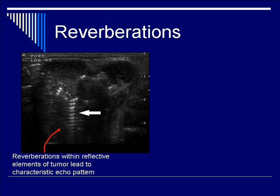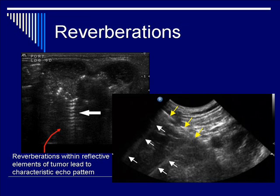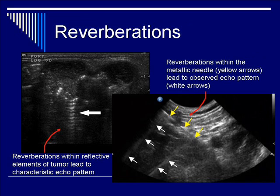This is the clearest picture we can show of a clinical setting of this particular artifact. A more common setting in which you will see this is in the case of an invasive procedure, such as a biopsy needle or a central venous catheter needle insertion, which will also demonstrate the reverberation artifact. Here, the yellow set of arrows point out the needle, whereas the two sets of white arrows point out the reverberation artifacts emanating distally from the metallic object.